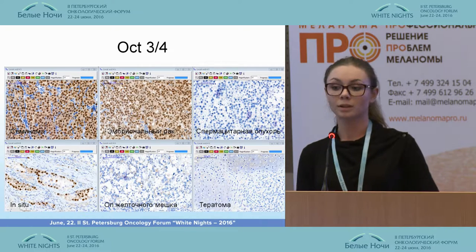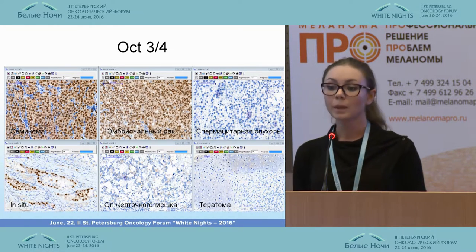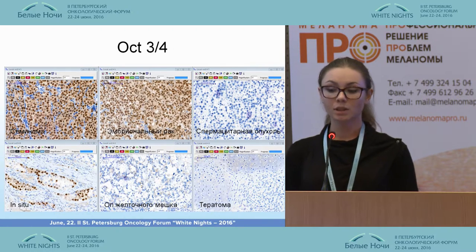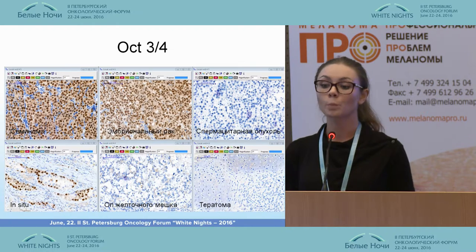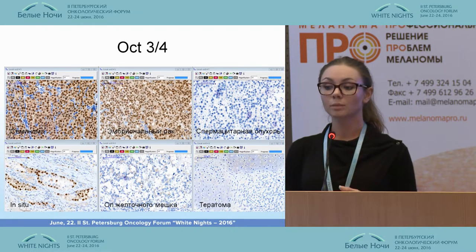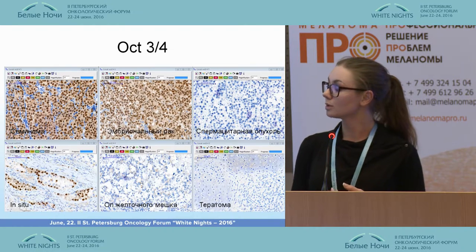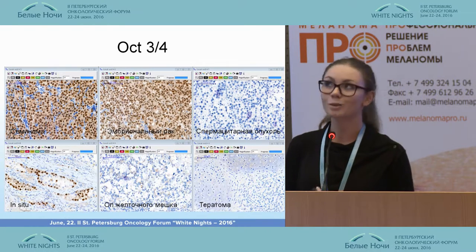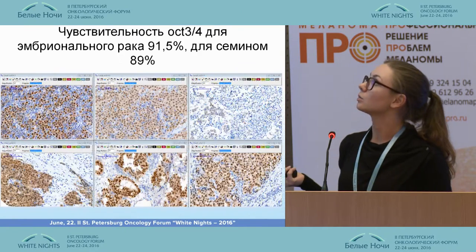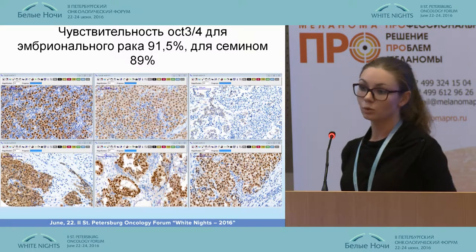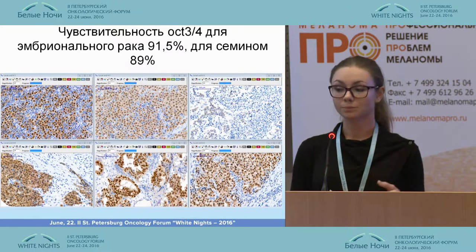SOX17 is a transcription factor expressed with nuclear coloring. At high expression rates there is cytoplasmic coloring. It is positive in embryonal carcinoma and seminoma, as well as intratubular seminoma. All other germ cell tumors are negative for this marker.